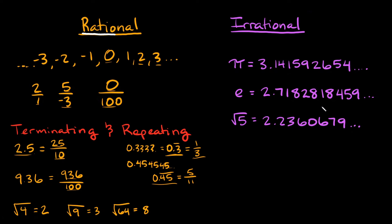Another example of an irrational number is a non-perfect square root. For example, the square root of 5 equals 2.236 and goes on forever without repeating, making it irrational.